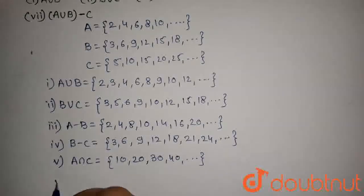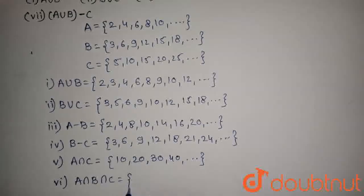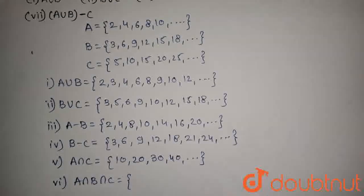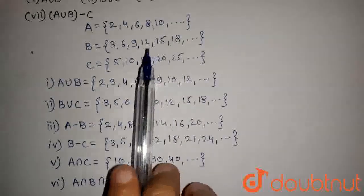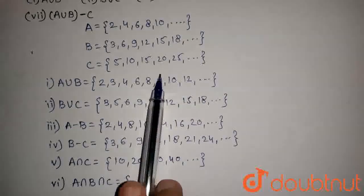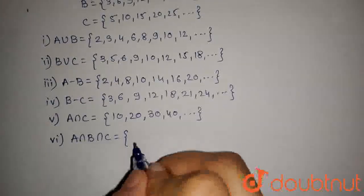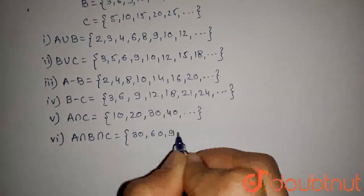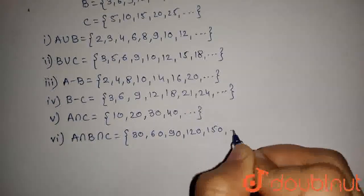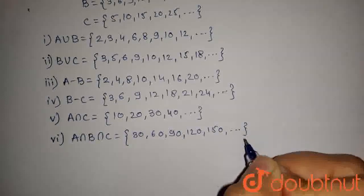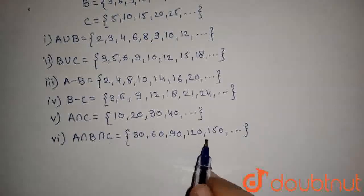The sixth part is to find A intersection B intersection C. This set will contain all the natural numbers which are multiples of 2 as well as 3 as well as 5. So the elements will be 30, 60, 90, 120, 150, and so on — meaning this set contains all natural numbers which are multiples of 30.